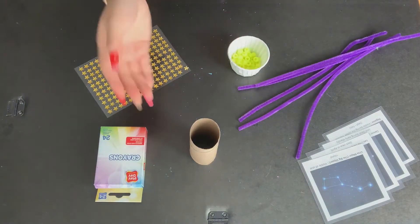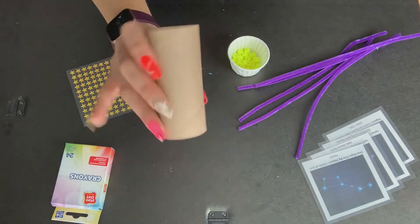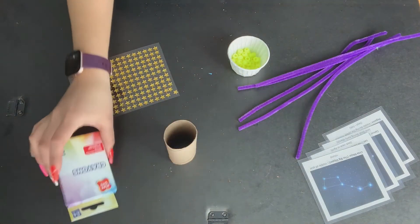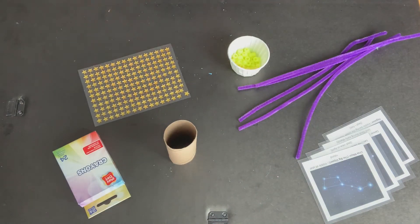And then, once that's all done, you're going to get your stargazer ready to go. Using a paper tube and the materials, you're going to decorate your stargazer.